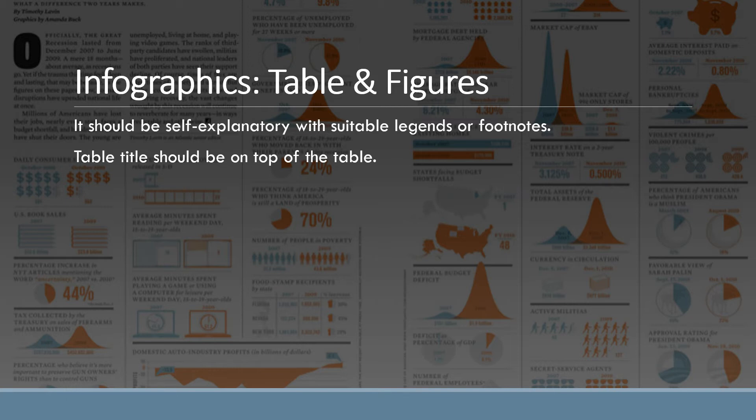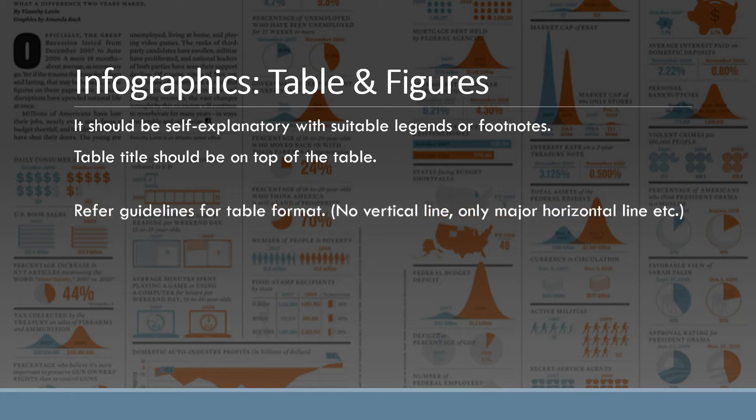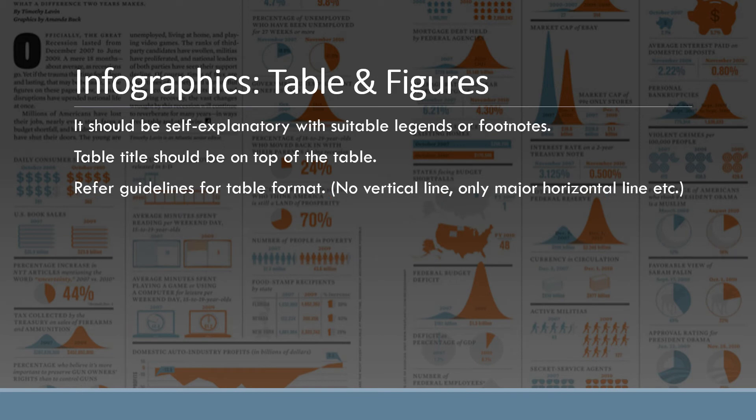Table title should be on top of the table. You should comply with the guidelines. Refer guidelines for table format. Many journals provide that particular format like no vertical lines, only major horizontal lines, etc. for presentation of tables. You can also refer the recent articles and the table there and follow the style.